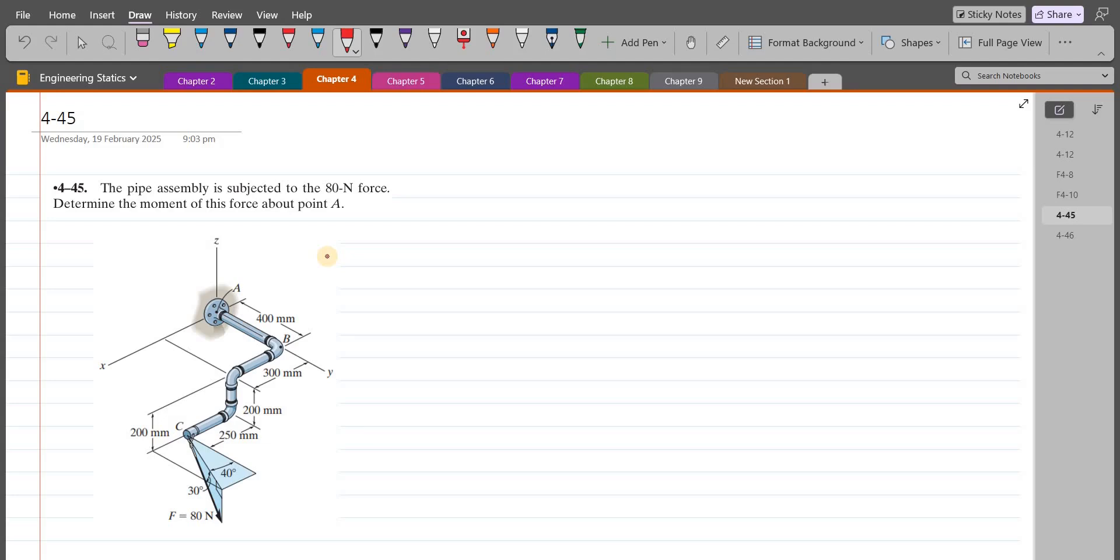To solve this problem, first we have to recall that the moment M is the cross product of the moment arm and the force vector. So we have to express the force F in terms of Cartesian vector form.